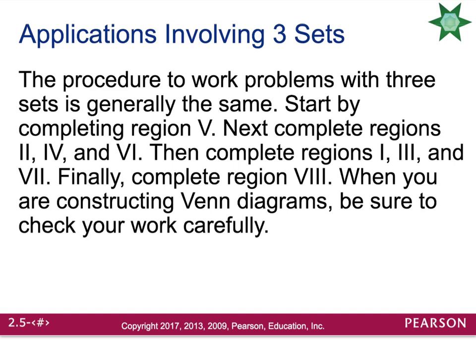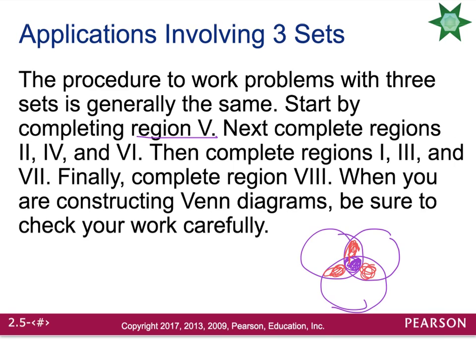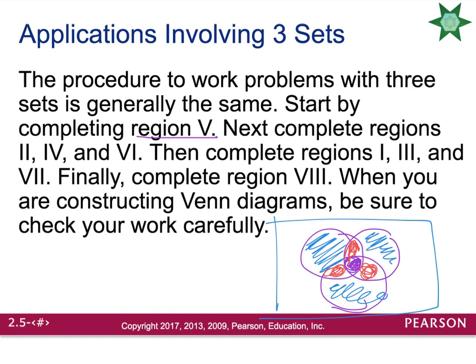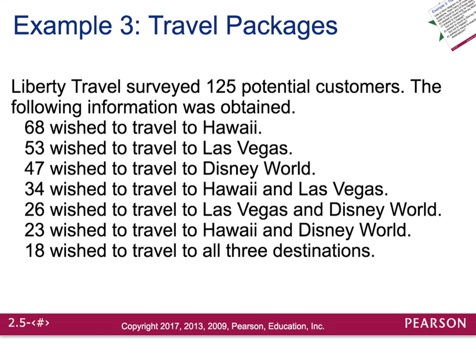Next, to make it more in depth, we'll look at story problems that have three sets. The procedure is going to be the same. You want to start by completing region five — the triple overlapping area in the middle. After that, work your way outward and deal with the double regions, then move to the singles. Finally, figure out what goes on the outside that doesn't belong in any of the three circles.